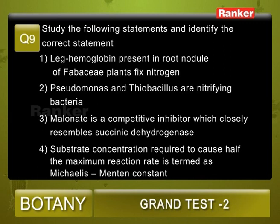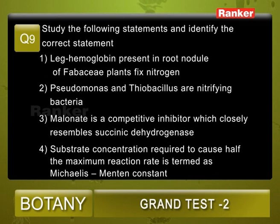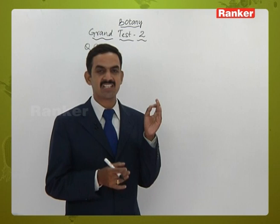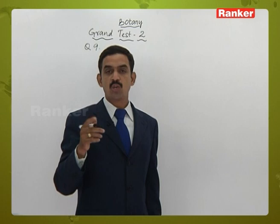Question number nine: study the following statements and identify the correct one. One — leg haemoglobin present in root nodules of Fabaceae plants fixes nitrogen. Two — Pseudomonas and Thiobacillus are nitrifying bacteria. Three — malonate is a competitive inhibitor which closely resembles succinic dehydrogenase. Four — substrate concentration required to cause half the maximum reaction rate is termed the Michaelis-Menten constant.